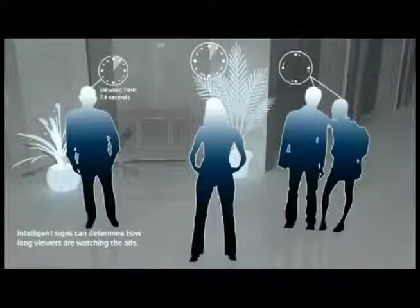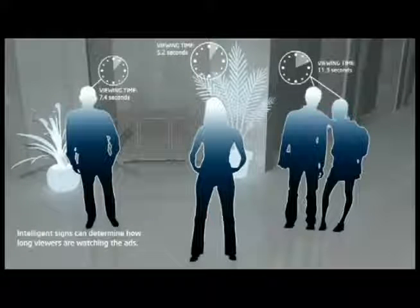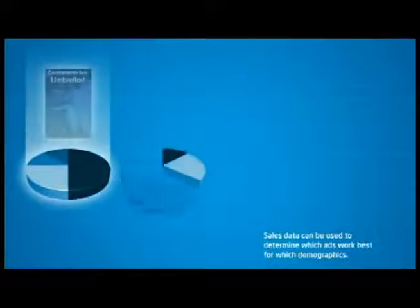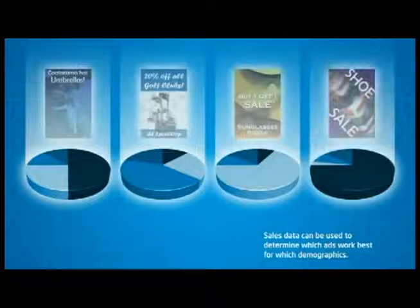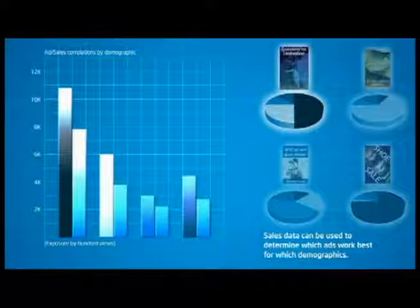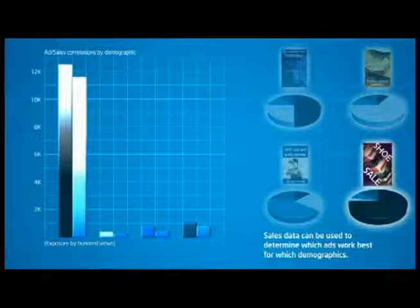For example, they can even determine how long viewers are watching the ads. These capabilities enable advertisers to measure ad effectiveness with greater precision. By correlating sales data with the ads shown and the audience's demographics, advertisers can target ads directly to their audience and measure their effectiveness.